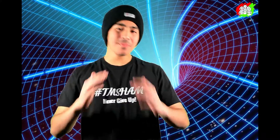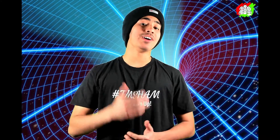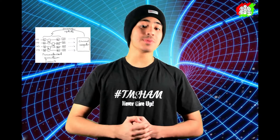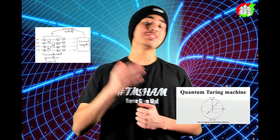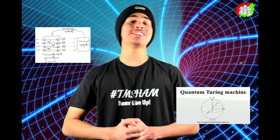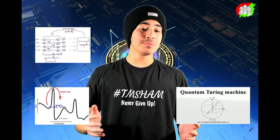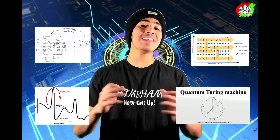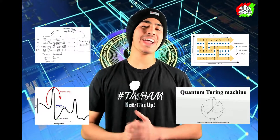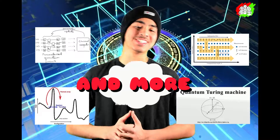There are many types of quantum computers: there's a circuit model quantum computer, there's a Turing quantum machine, there's an adiabatic quantum machine, and there's a one-way quantum computer, and there are so many more.